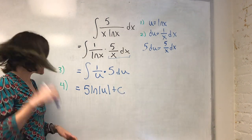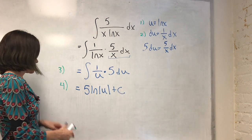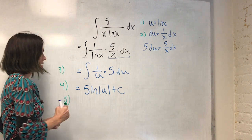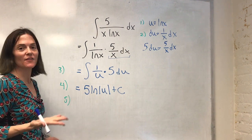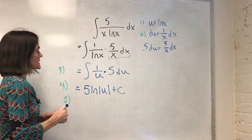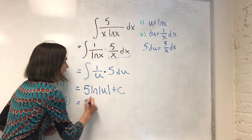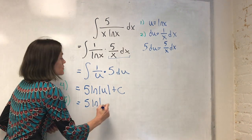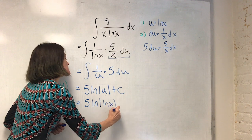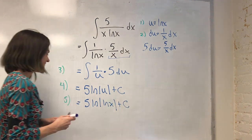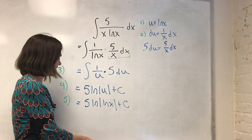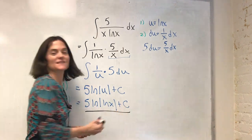We are not quite done. The last step, step five, is we go back to our original variable, which in this case is x. So this is 5 ln, absolute value, ln of x, plus c. And this one here, this is our answer.